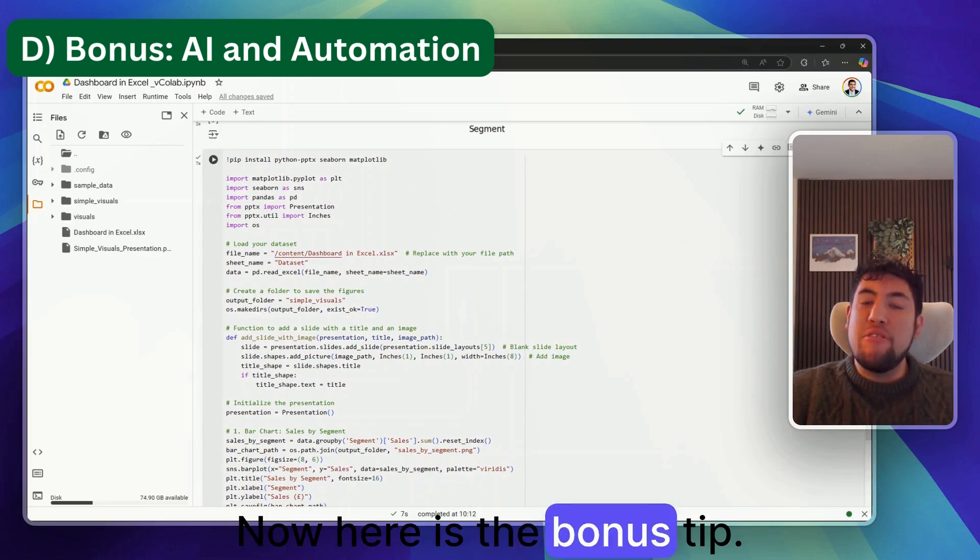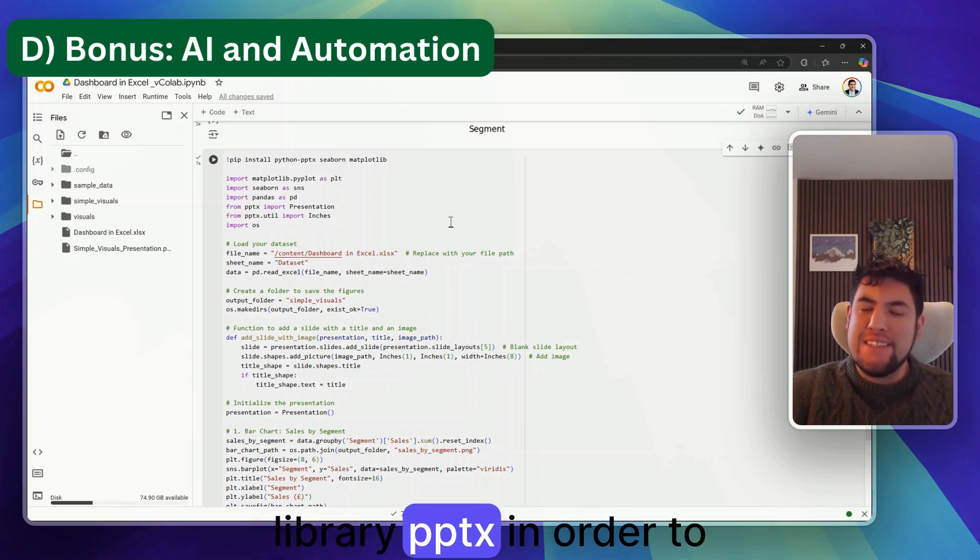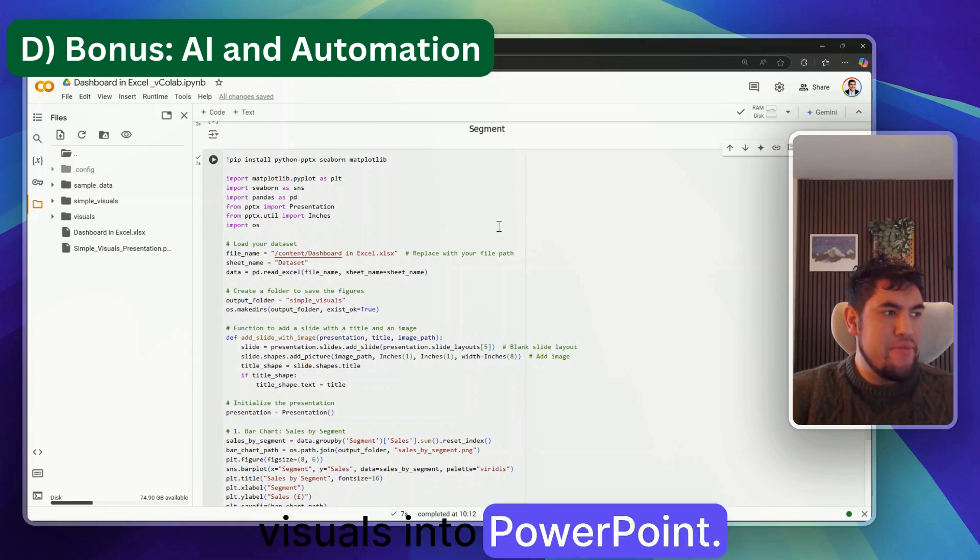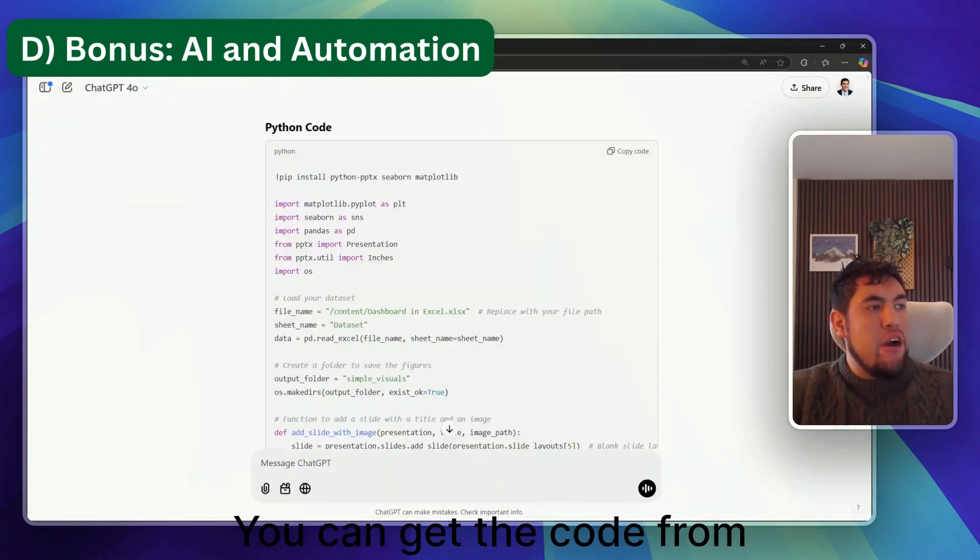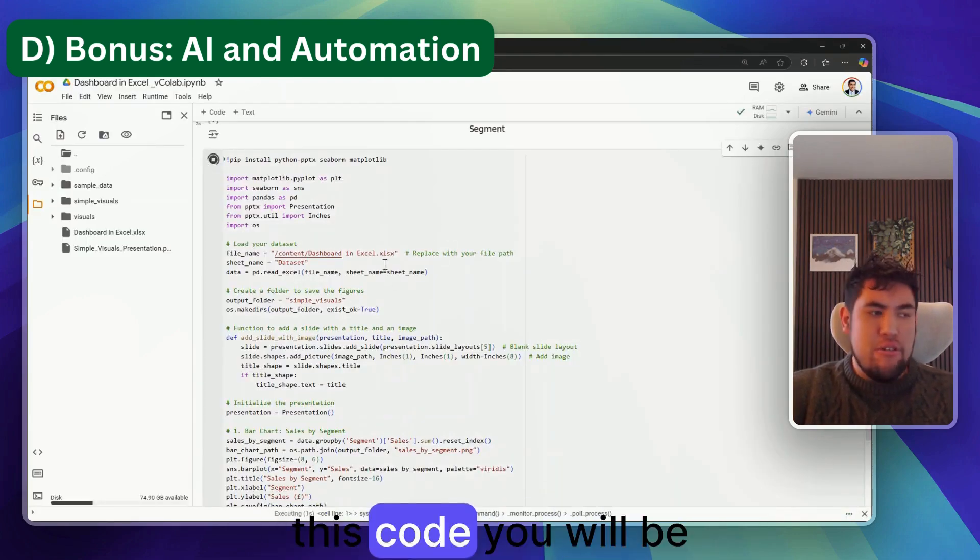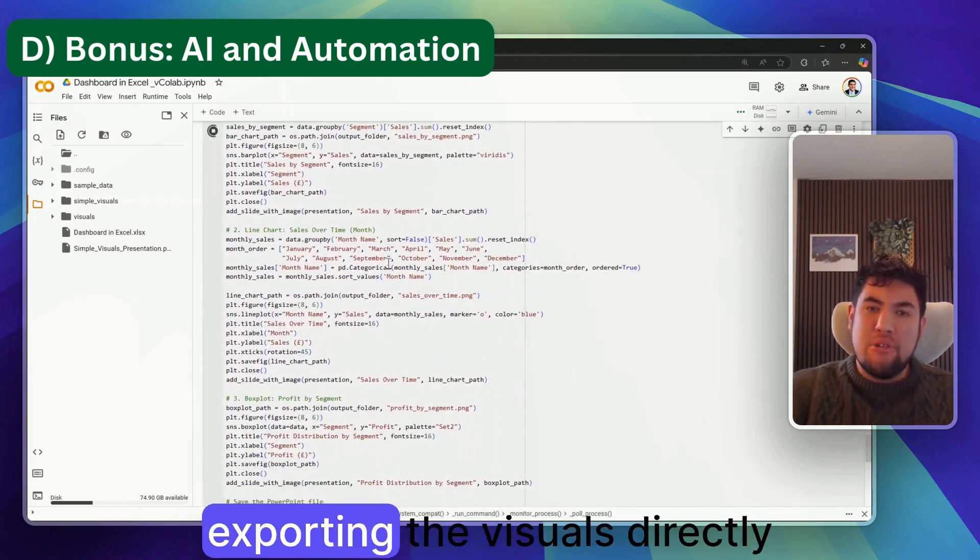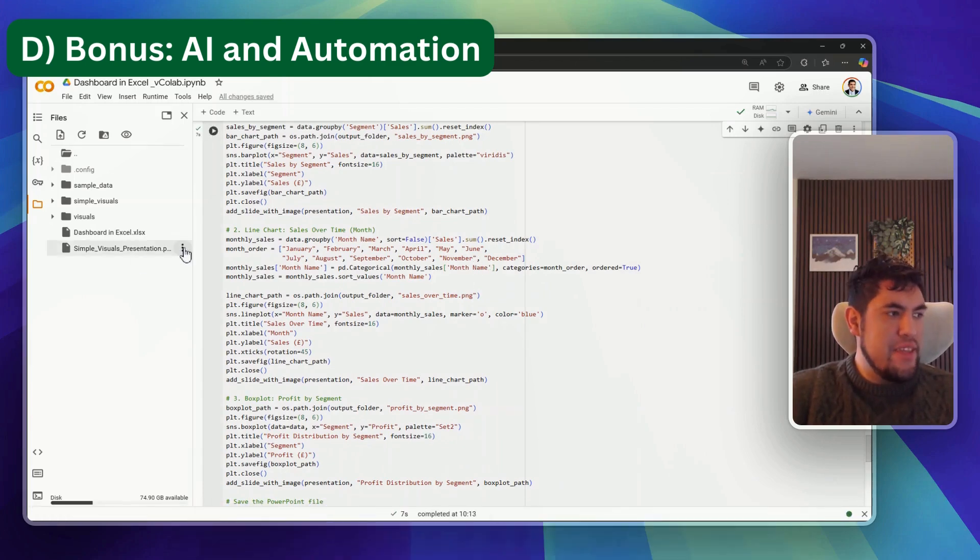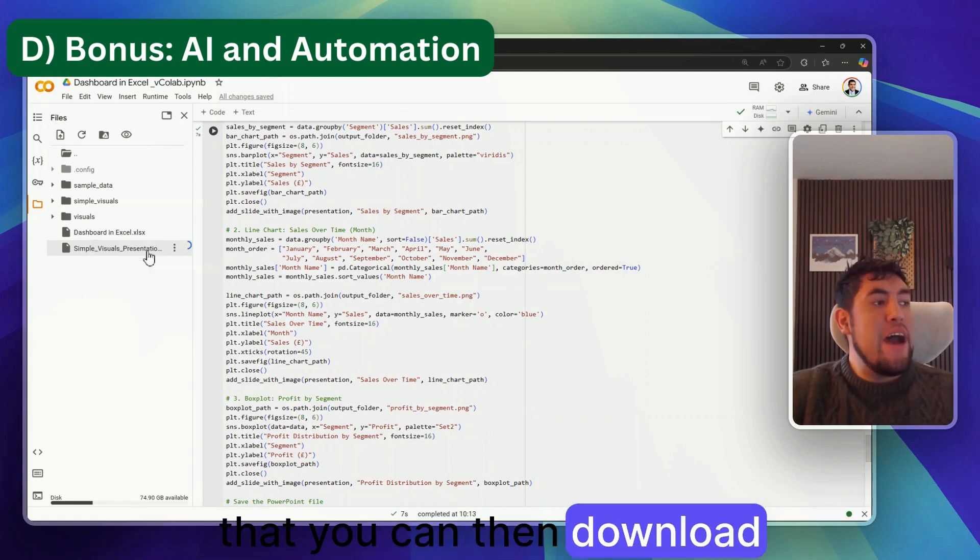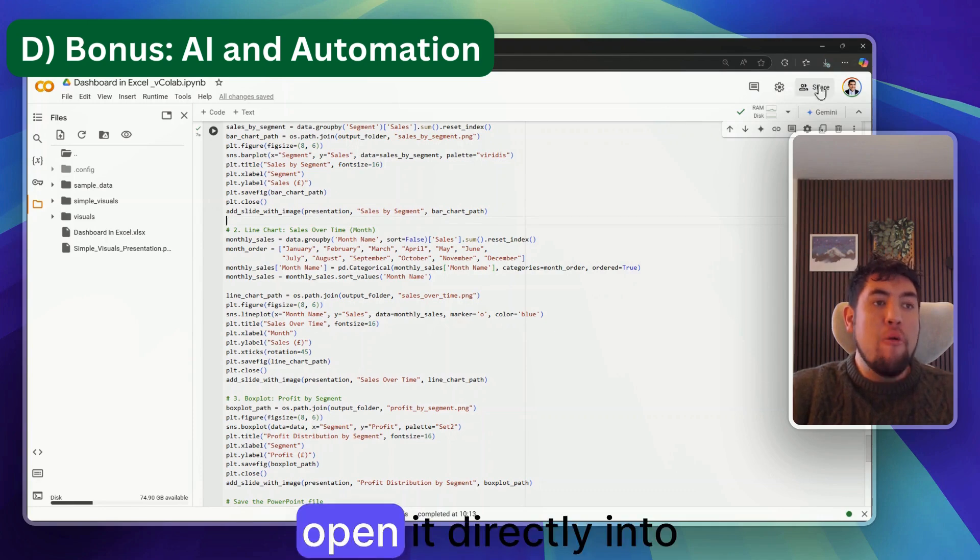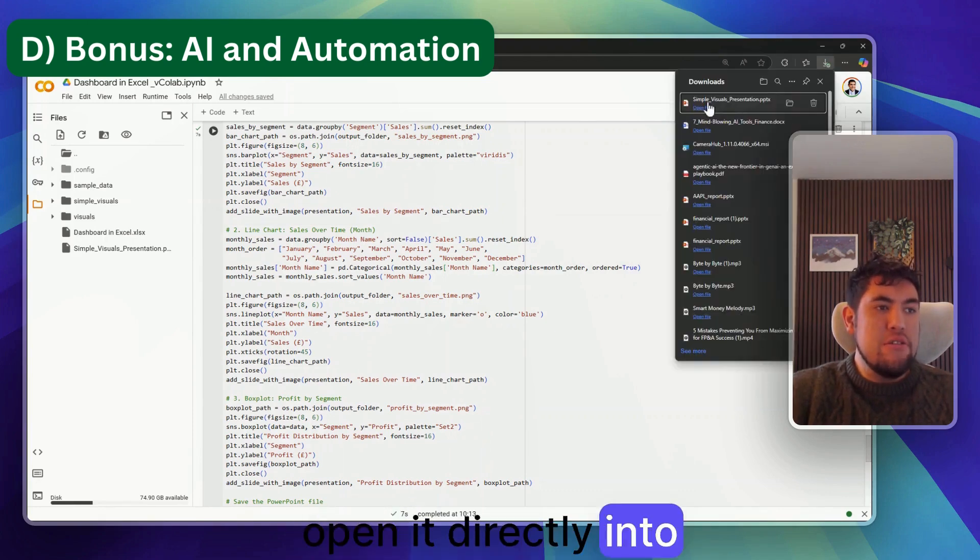Here is the bonus tip. You can also use the Python library pptx in order to automate exporting these visuals into PowerPoint. You can get the code from ChatGPT and then after you run this code, you will be exporting the visuals directly into a PowerPoint presentation that you can then download from here.